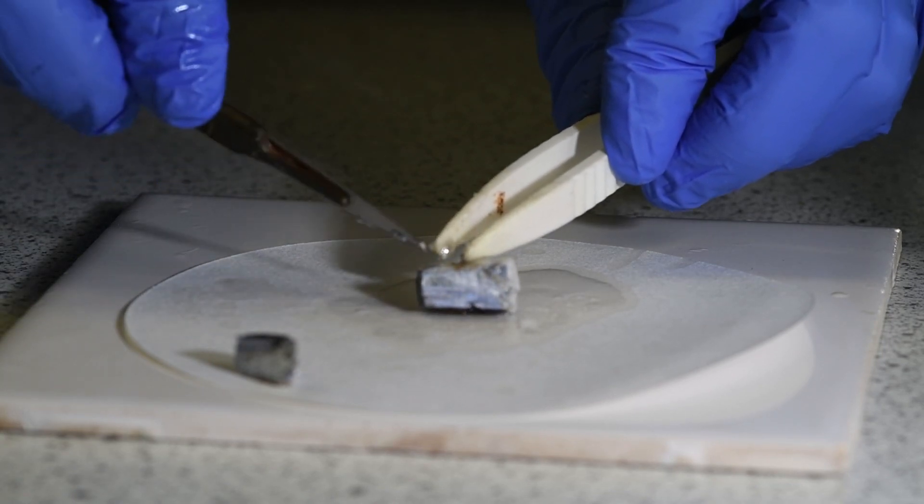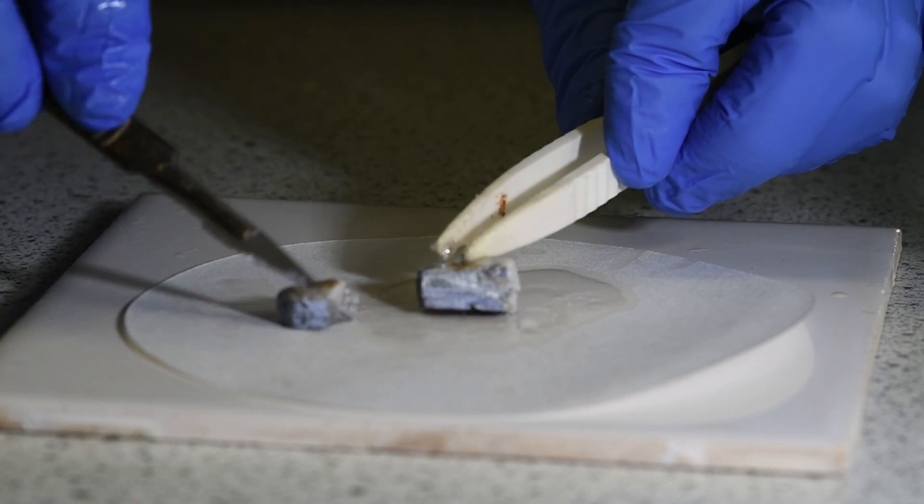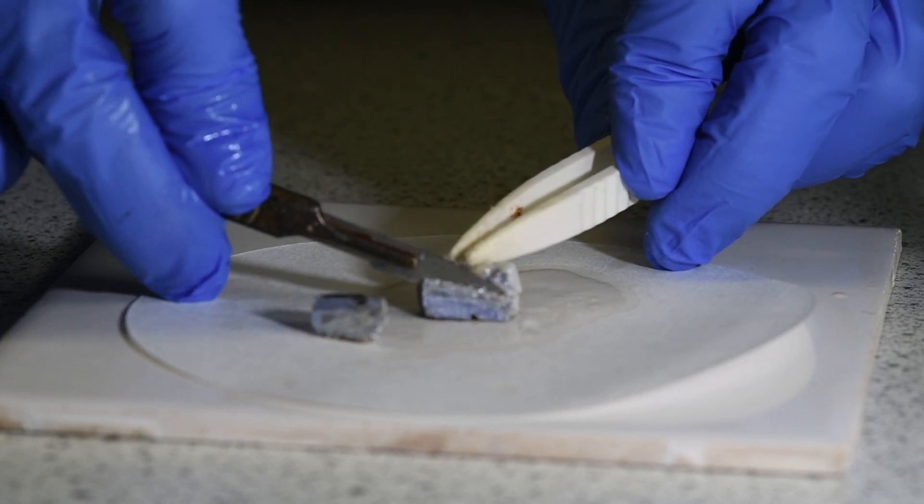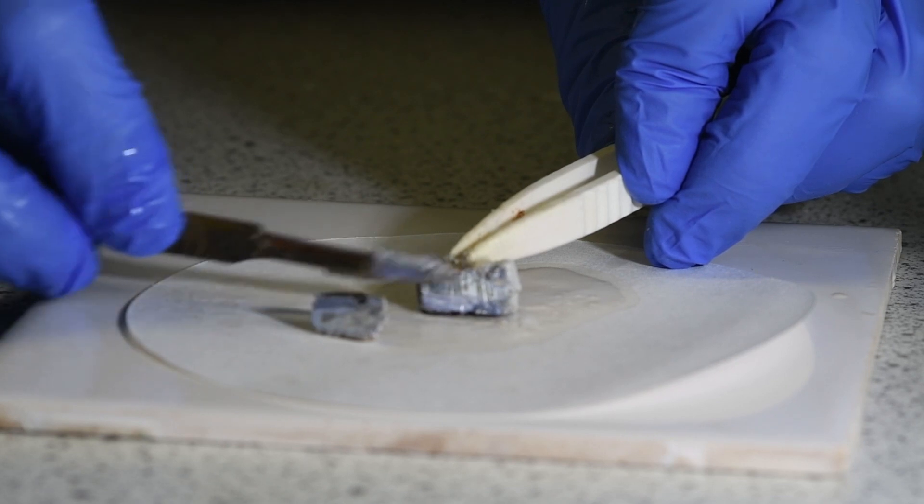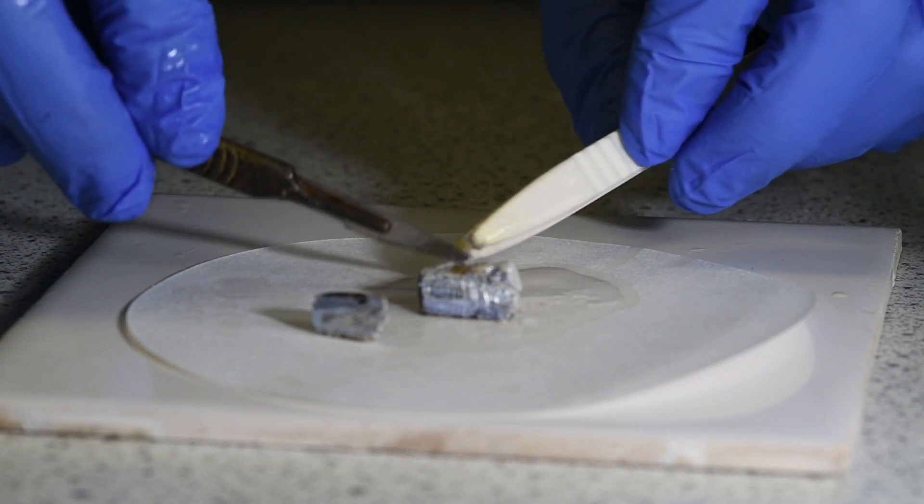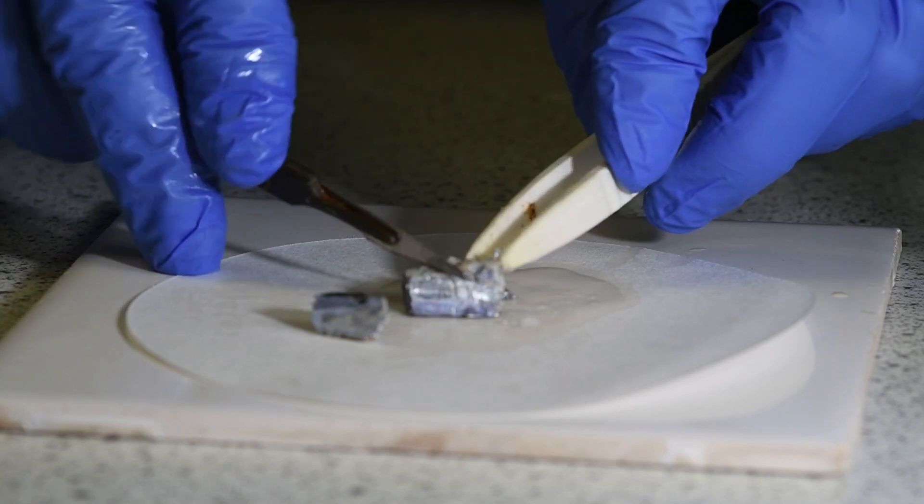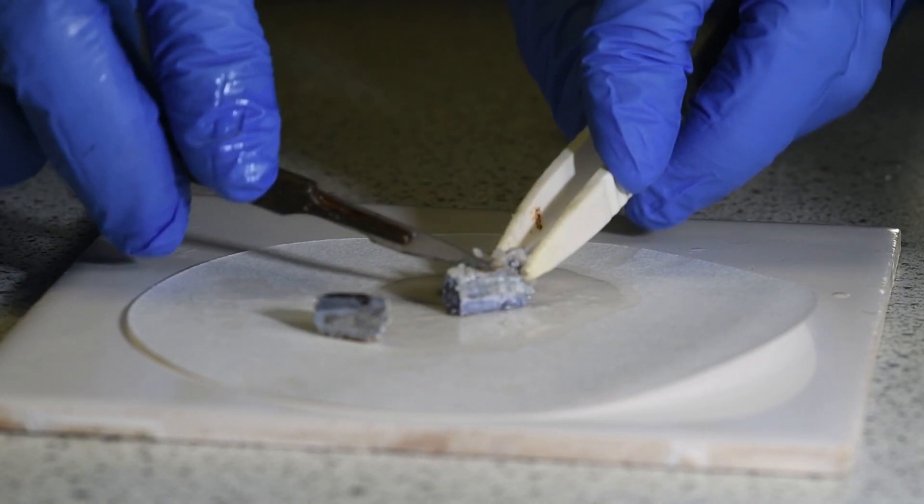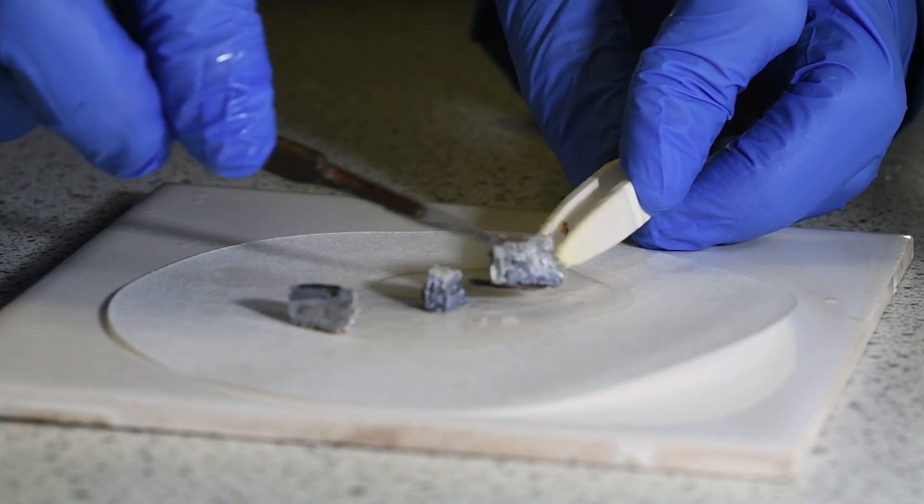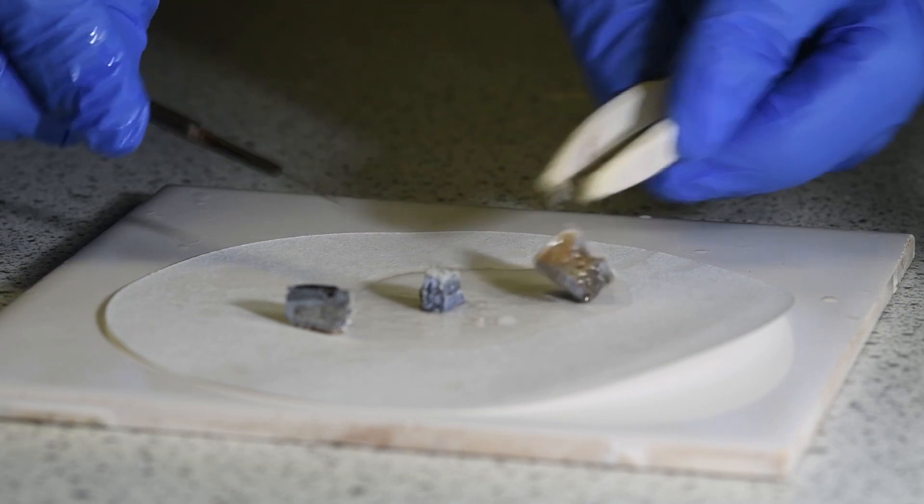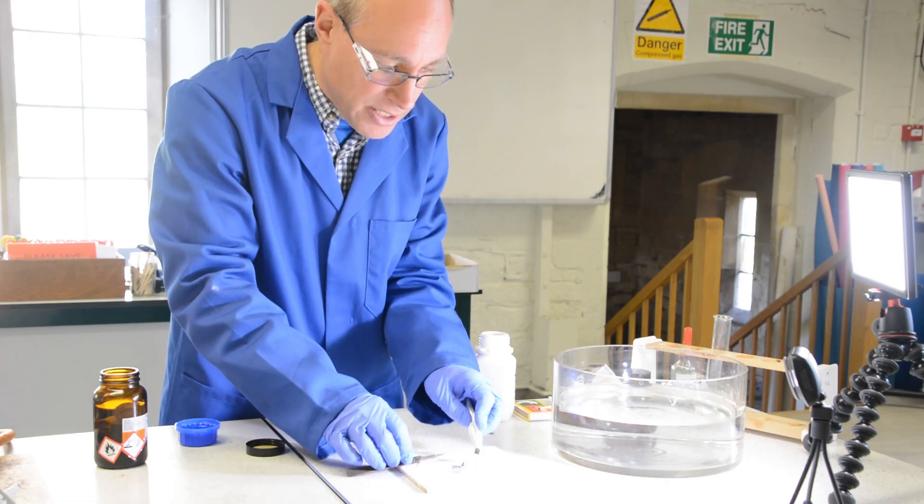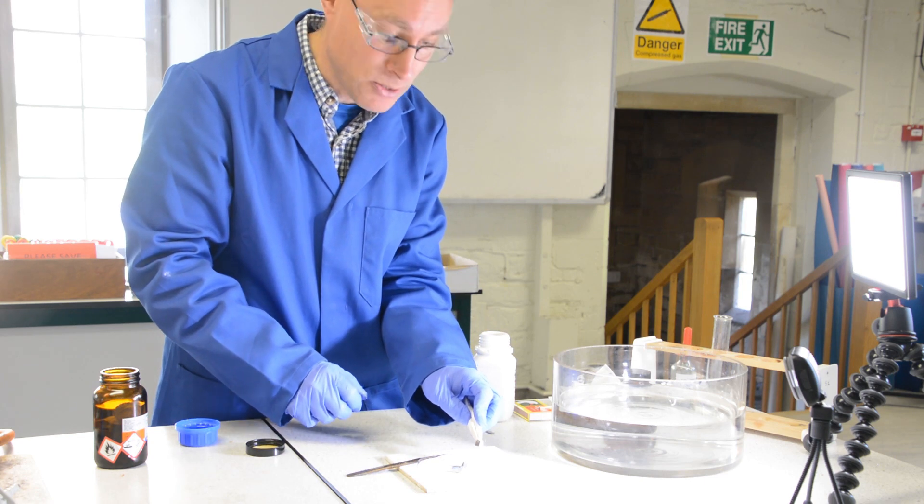And again, you get a shiny surface where it's cut. But that shiny surface very quickly tarnishes to go cloudy as the potassium reacts with oxygen in the air to produce potassium oxide. So very, very quickly that cut surface tarnishing there. So that's the alkali metals with air.